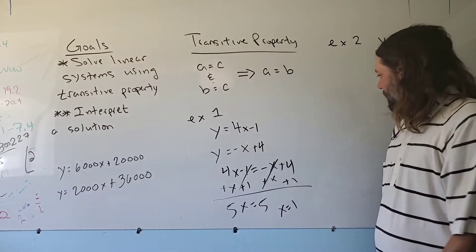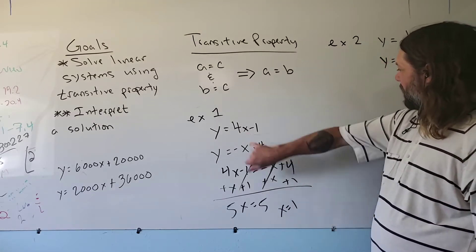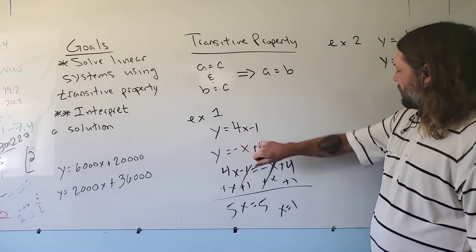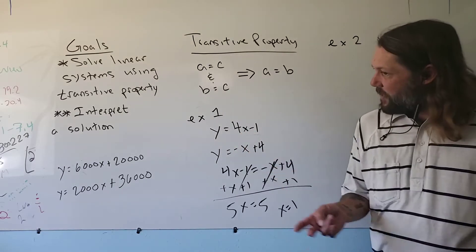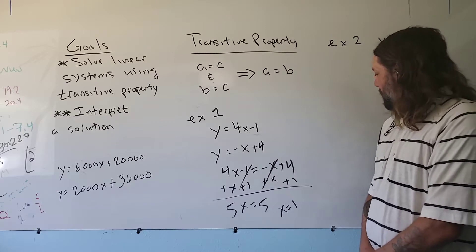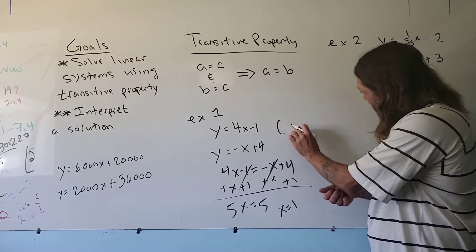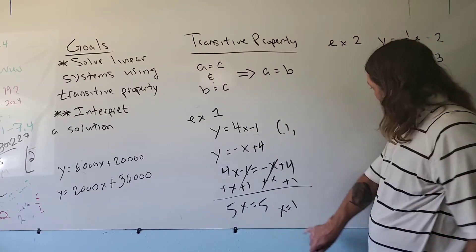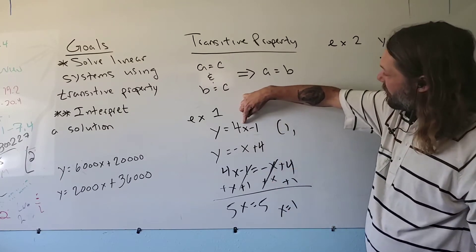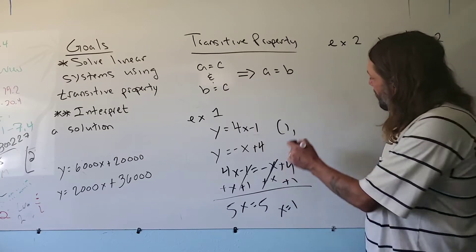It's a real simple lesson. I can plug this in here. 4 times 1 is 4, 4 minus 1 is 3. So my first answer to this problem is going to be, that's my x value. So my x is 1. When I plug in 1 to this, it's 4 times 1, which is 4, 4 minus 1 is 3. So 1 comma 3.